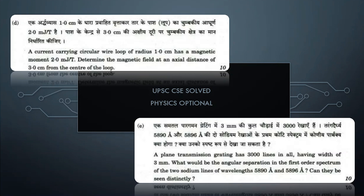Hello everyone. In today's video we will be solving the previous year question of UPSC CSA physics optional exam. We have two questions. In the first question, we are given a current carrying circular wire loop of radius 1 centimeter which has a magnetic moment of 2 millijoule per Tesla. We have to determine the magnetic field at an axial distance of 3 centimeters from the center of the loop.